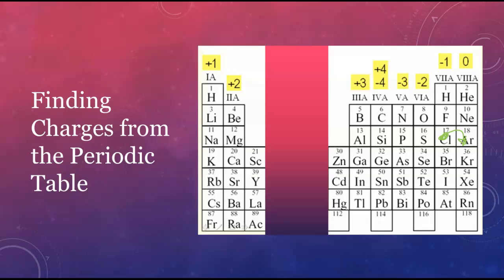Nitrogen, on the other hand, is three steps away, and so it forms an ion with a charge of minus three.